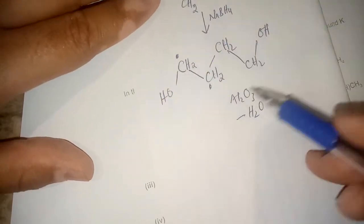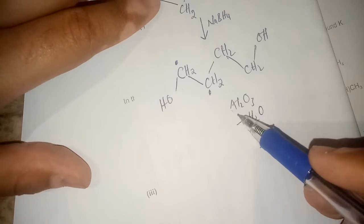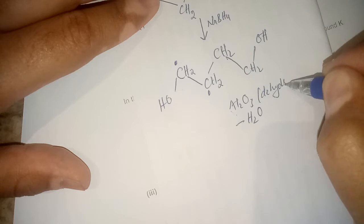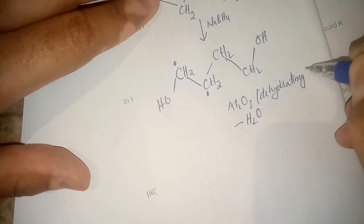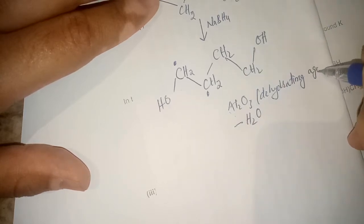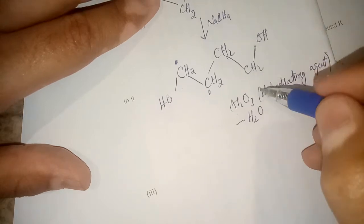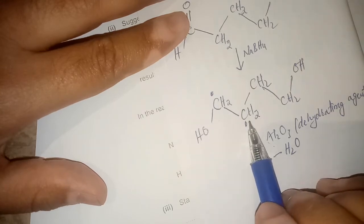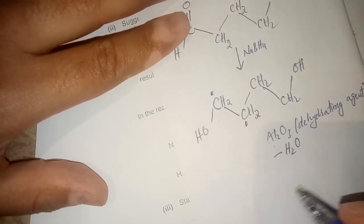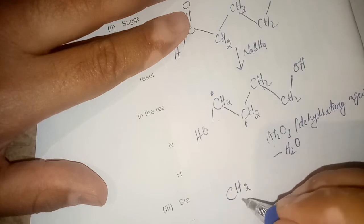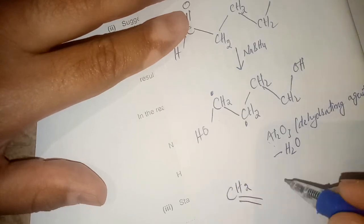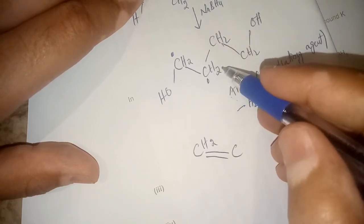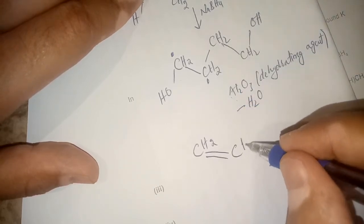When this molecule is reacted with Al2O3, which is a dehydrating agent, it will eliminate the water molecule. The OH from this carbon atom is removed, and from the adjacent carbon the H is removed. As a result we get a CH2 here and a double bond forms here.